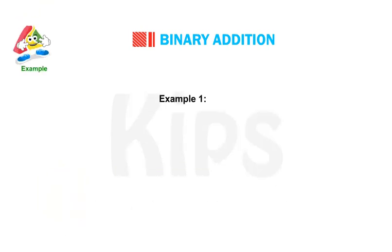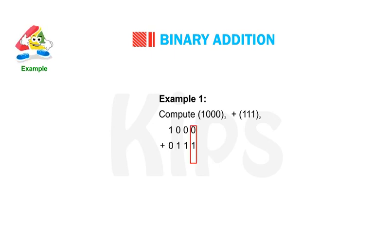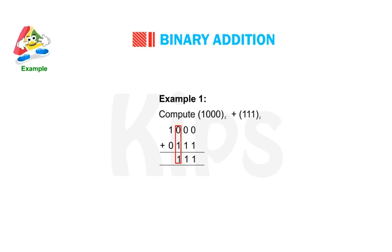Example 1: Compute binary 1000 plus binary 111. 0 + 1 = 1; 0 + 1 = 1; 0 + 1 = 1; and 1 + 0 = 1. The result is 1111.